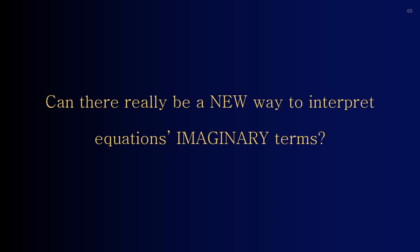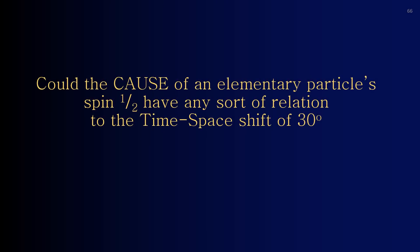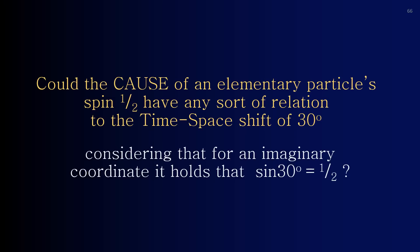Can there really be a new way to interpret equations' imaginary terms? Could the cause of an elementary particle spin one-half have any sort of relation to the time-space shift of 30 degrees? Considering that for an imaginary coordinate, it holds that the sine of 30 degrees equals one-half.